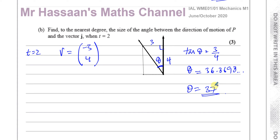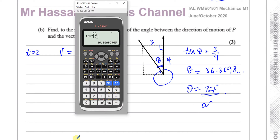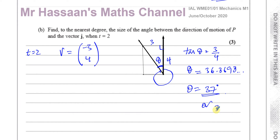If the question had said find the bearing, we would need to find the clockwise angle, which would be 360 minus 37 = 323 degrees, and that would also be acceptable as an answer since it's also the angle between the j component and this line. But since the question doesn't mention bearing, the answer is most likely 37 degrees, and that's the answer to part B.